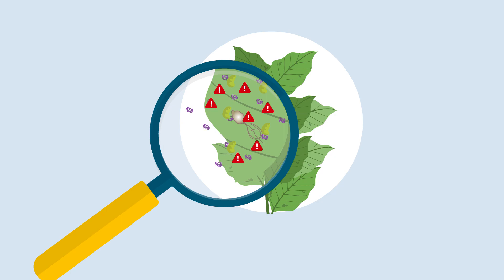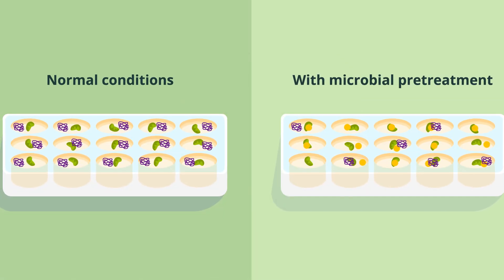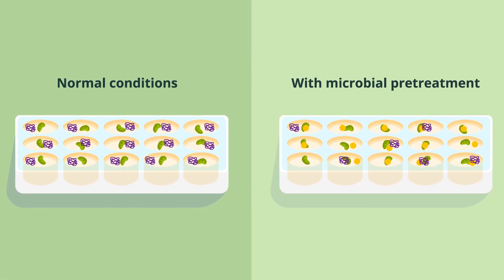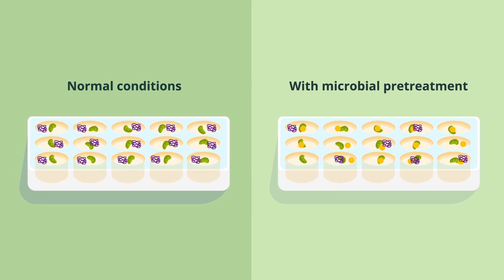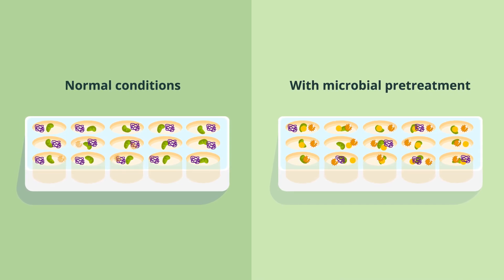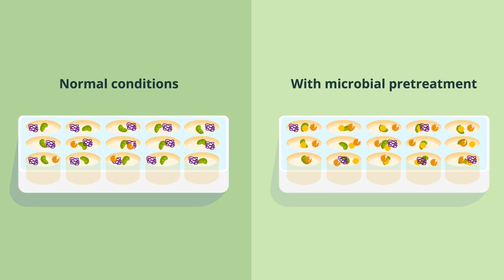These immune responses include the release of chemicals called reactive oxygen species. And if the candidate microorganism really has boosted the BY-2 cells' immune responses, then the cells will release greater than normal levels of reactive oxygen species.